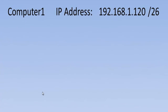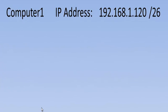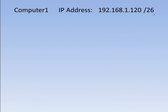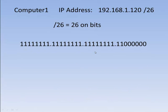The computer's IP address was 192.168.1.120/26. The first thing we have to figure out is what is /26. Well, /26 is what they call CIDR — C-I-D-R. CIDR represents the shorthand version of a subnet mask. The 26 actually means that there are 26 on bits. So with 26 on bits, it would look like this: 8 bits in this octet, 8 bits in this octet, 8 bits in this octet, and then two on bits in the last octet.